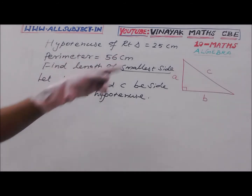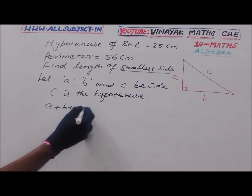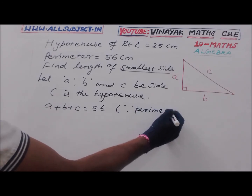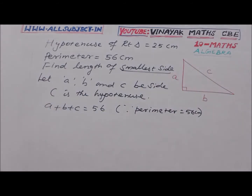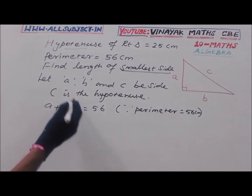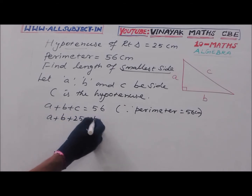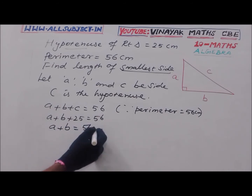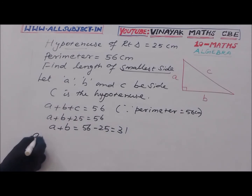Given perimeter equals 56, that means A plus B plus C is equal to 56. Since C is the hypotenuse and equals 25, substituting gives A plus B plus 25 equals 56. Subtracting 25, we get A plus B equal to 31.